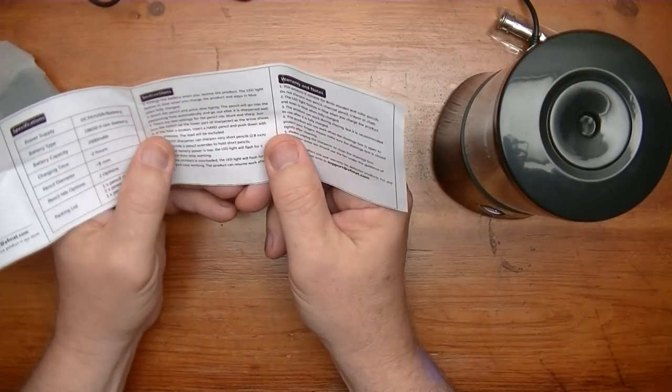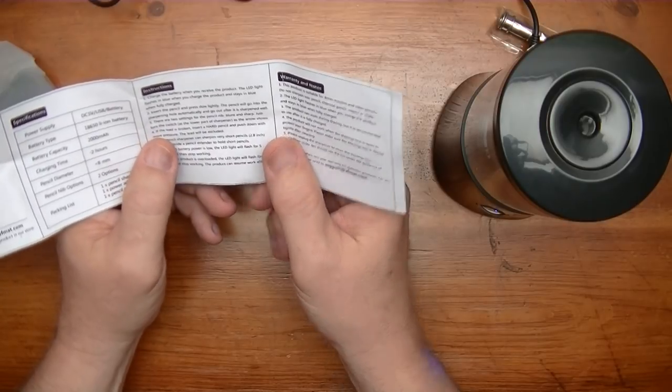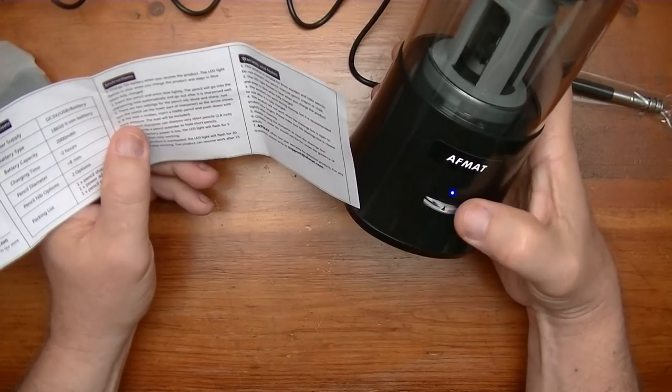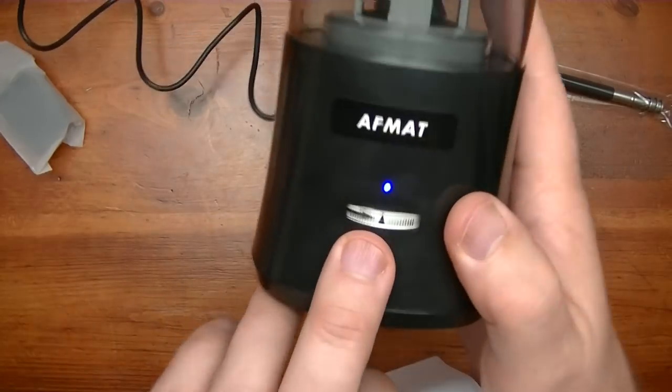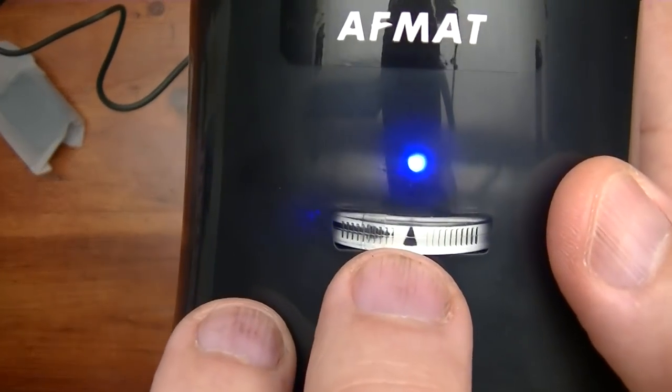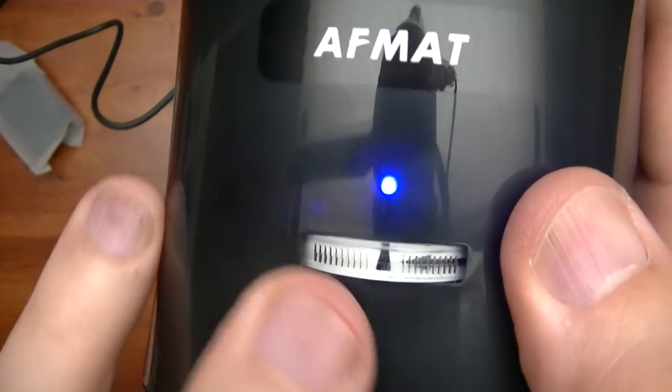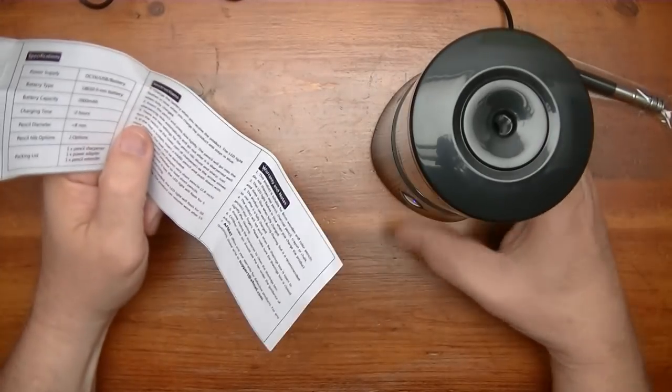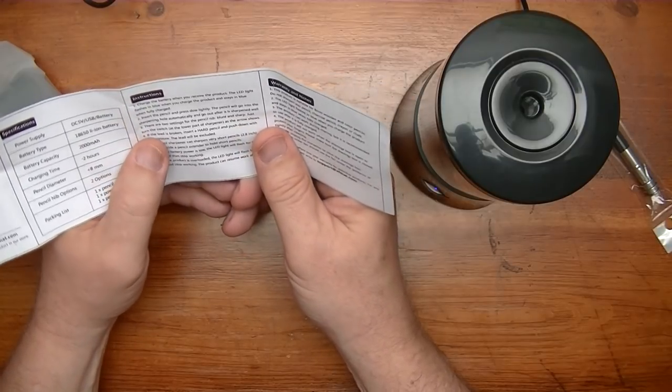Now there are two settings for this. There's blunt and sharp. Just turn the switch at the lower part of the sharpener. That's this wheel down here. It says as the arrow shows. So if you look closely you can see there's a point and then here you can see that it's blunt. So that's how you would set it. I'll set it to point. I never understood why anyone would want blunt, but it's there if you want it.